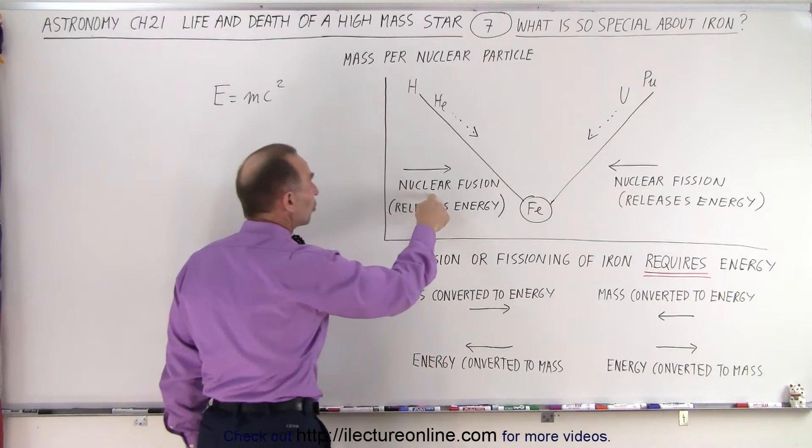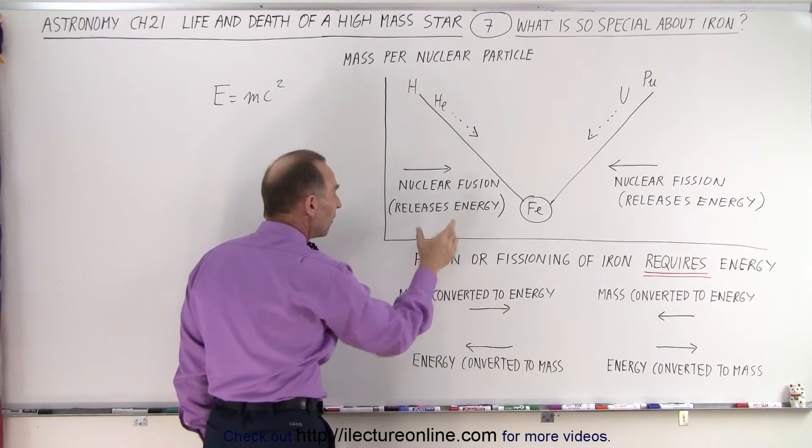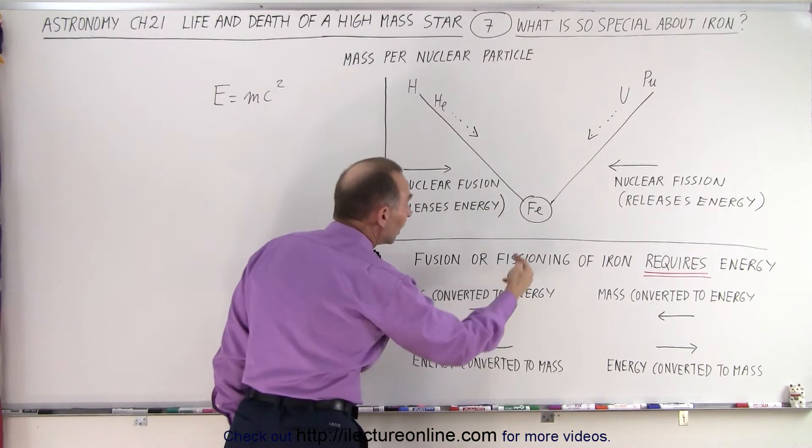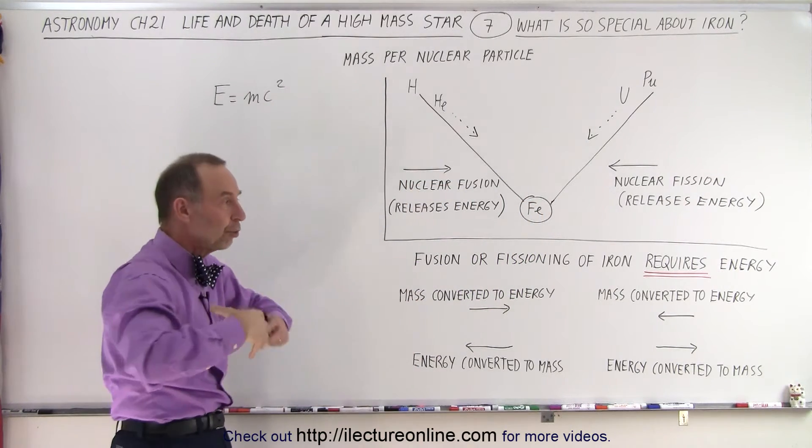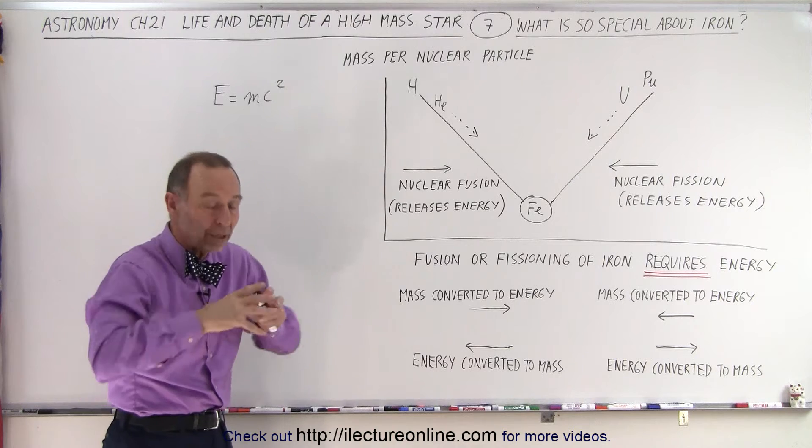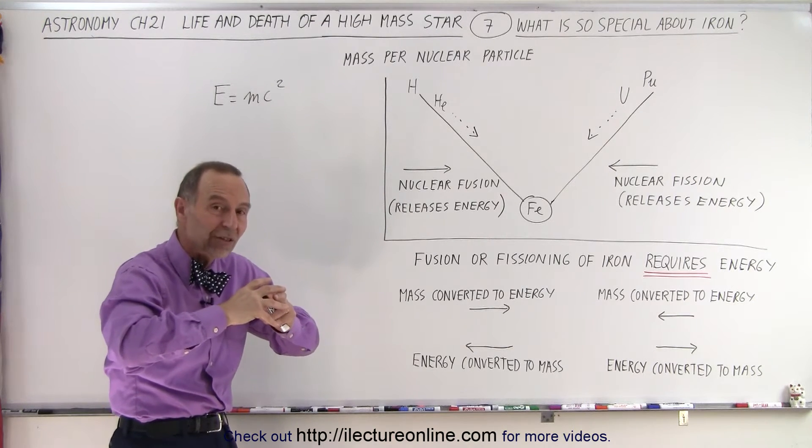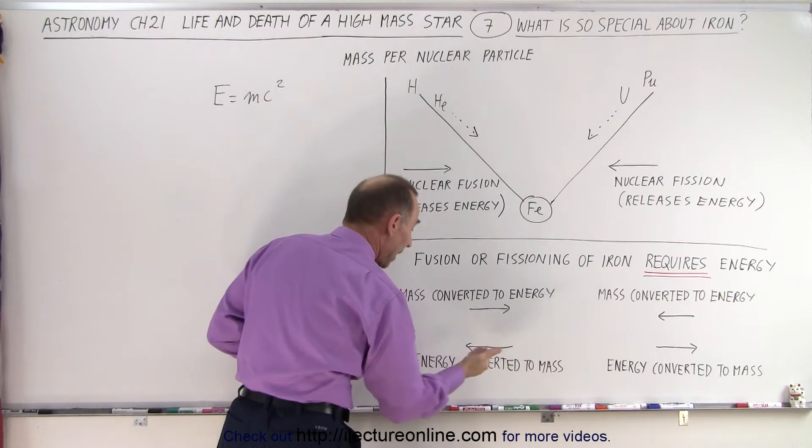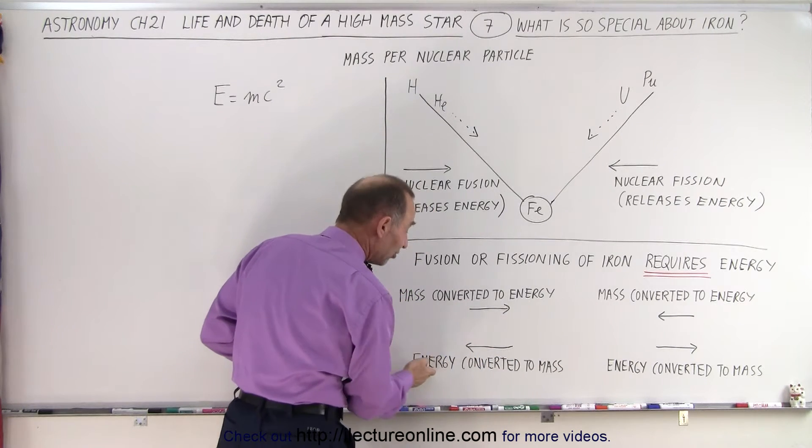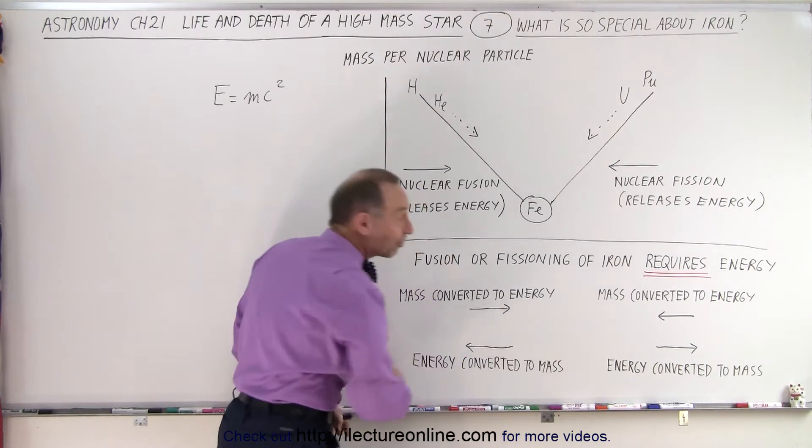So nuclear fusion causes a release of energy by converting mass to energy. If you try to go the other direction, then of course you need energy in order to build up lighter and lighter elements because now the average density of the nucleus has to increase, so somehow you have to convert mass back to energy—I'm sorry, energy back to mass by going in the opposite direction.